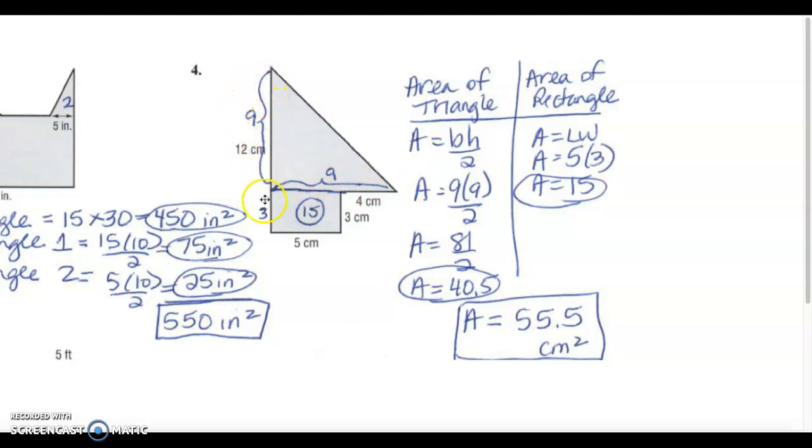This entire line is twelve. From here to here is three because this is three. So three plus nine gave me twelve. I knew that the triangle had a base of nine and a height of nine. So base times height divided by two gave me forty point five for my area of my triangle.